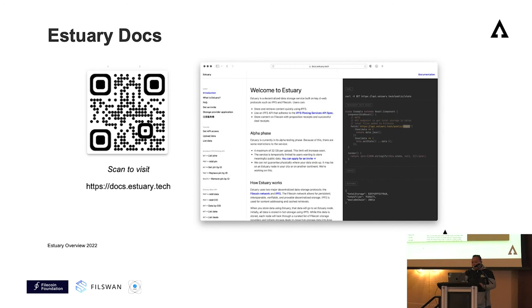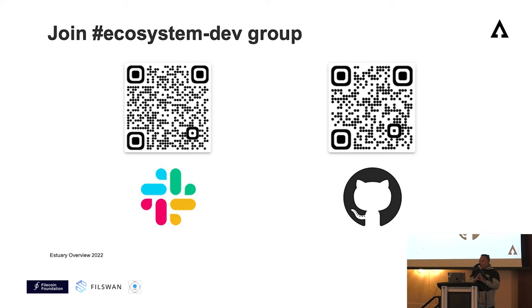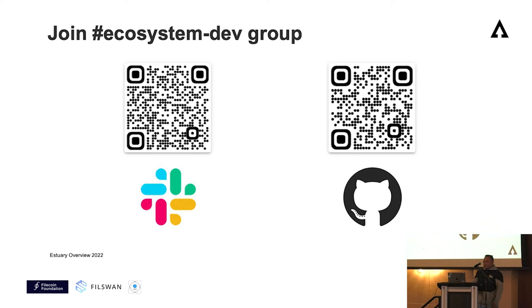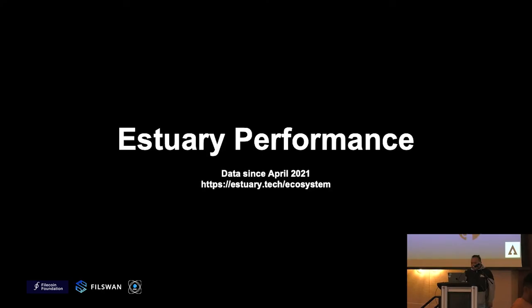All developer information, documentation, APIs, and guidelines are available at docs.estuary.tech. We have an ecosystem-dev group on Slack with five to six software engineers working on Estuary, and our team is always available there. If you come up with an issue or want to contribute to Estuary, which is part of Protocol Labs, you can go to our GitHub repository to create an issue, solve PRs, or raise a PR for any fixes. Then I'll give the floor back to Corrine for the performance.